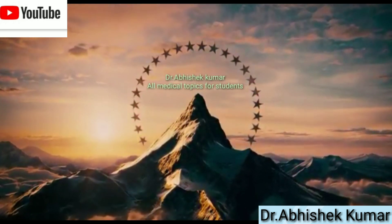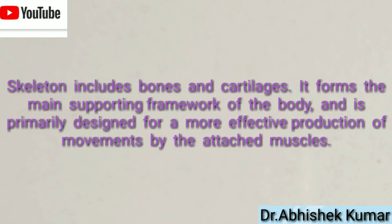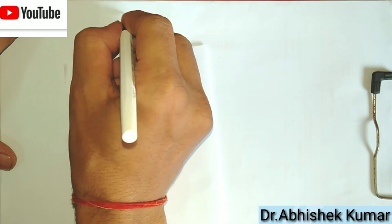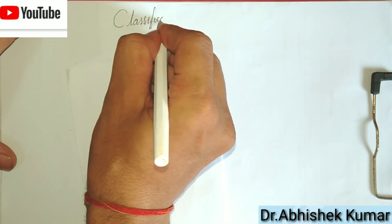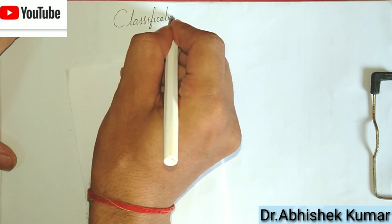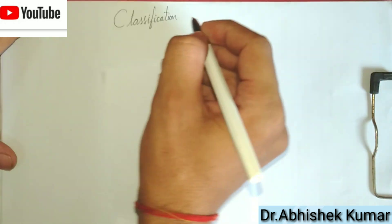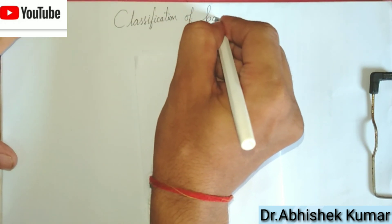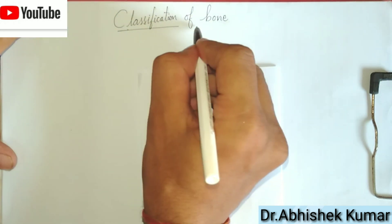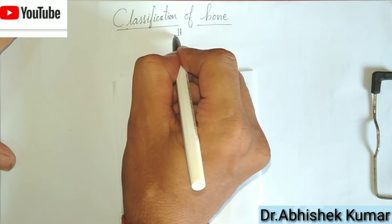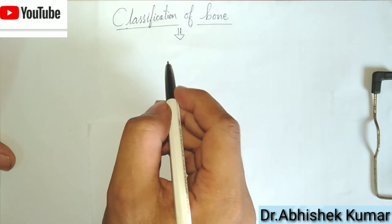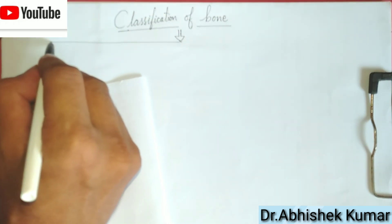A skeleton includes bone and cartilage. It forms the main supporting framework of the body and is primarily designed for more effective production of movement by attached muscles. Here we will see the classification of bone. Mainly, classification of bone is divided into 4 types.